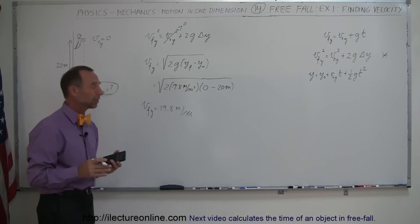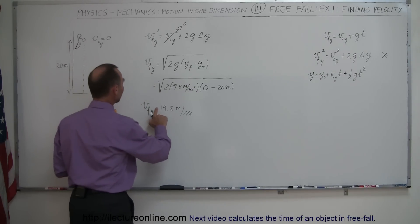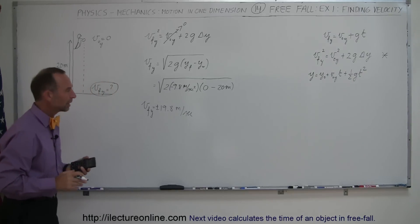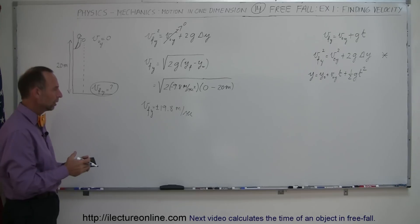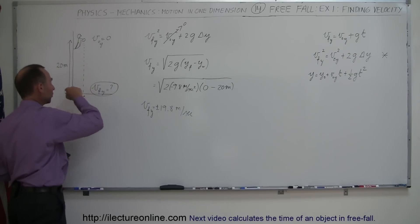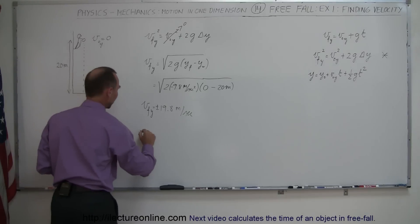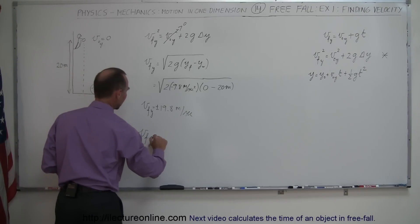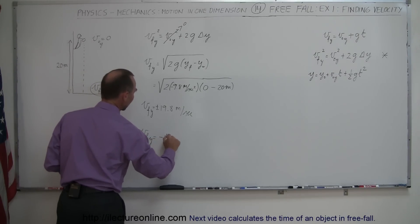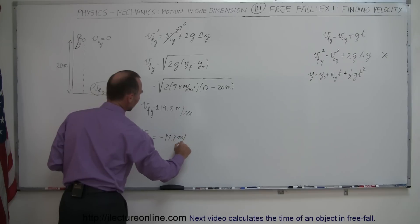Since we're taking the square root of a number, that can actually be plus or minus. The logical answer would be the minus, because we're looking at the velocity on its way down, just before it hits the ground. So the final answer is v-sub-y equals minus 19.8 meters per second.